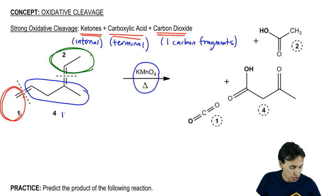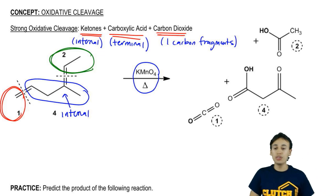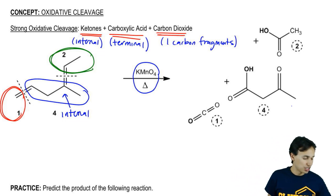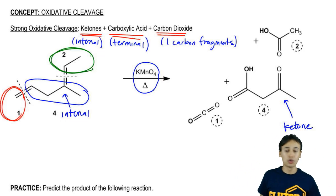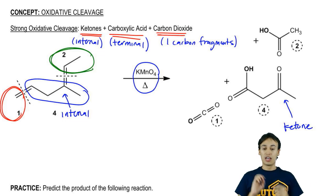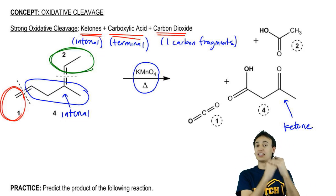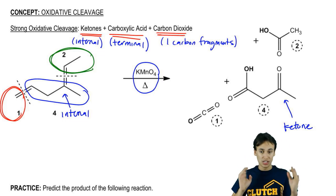This is an example of an internal double bond. Notice that it's surrounded by R groups on both sides. That's not going to change. When it's internal, it becomes a ketone because those R groups aren't going anywhere. As a general rule, we're not breaking off R groups. We're just breaking the double bond and that's it. R groups are in place.